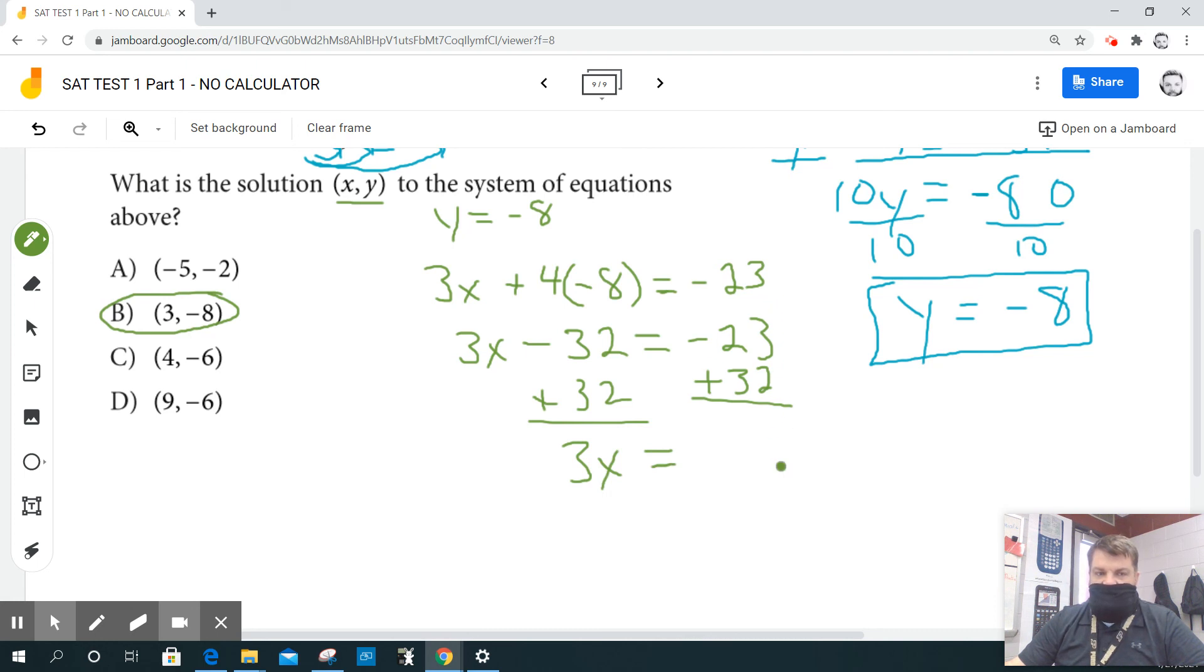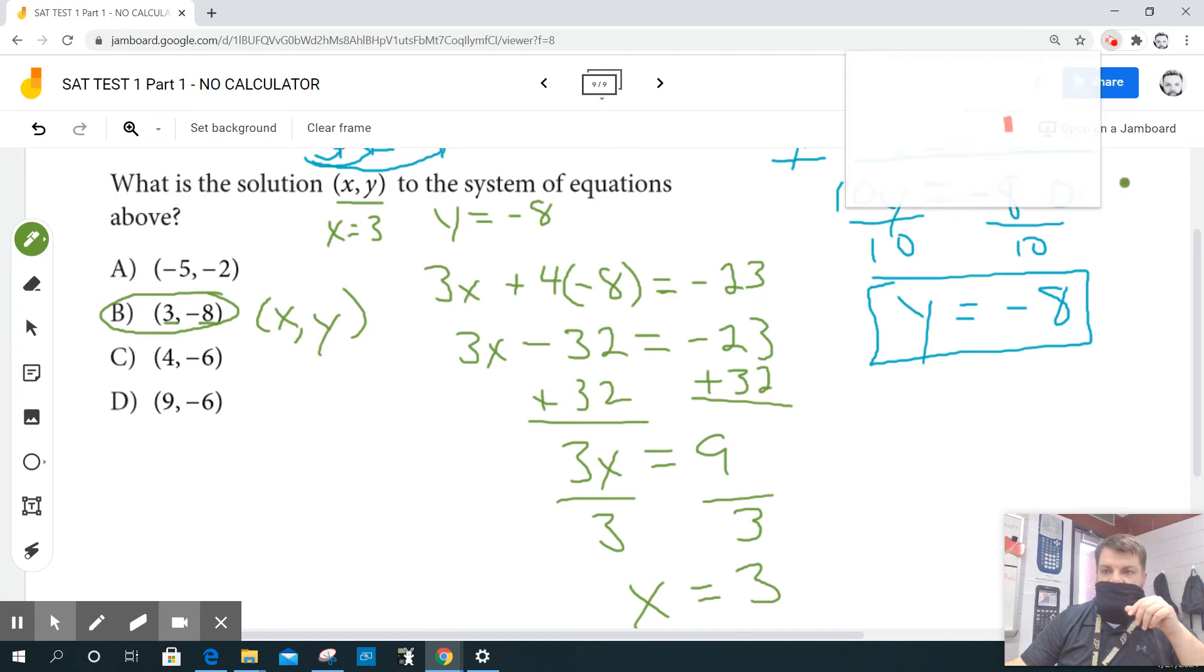What's this? Nine, positive nine. So then I'm going to divide both sides by three and I get x equals three. So if x equals three and y equals negative eight, and I have x comma y, is that my answer? Three comma negative eight. Yep. Well, bam with bacon sizzle.